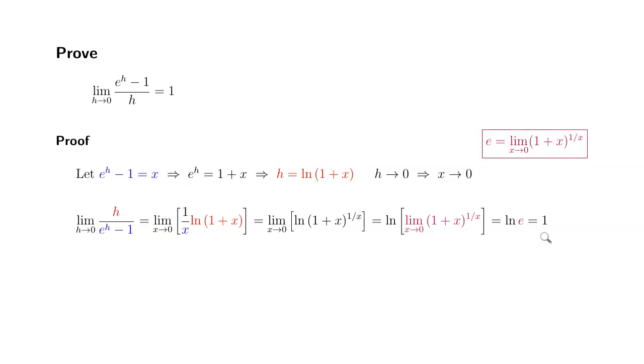By taking the reciprocal of 1, it's still going to be 1. So the limit of e to the h minus 1 all over h as h approaches 0 is equal to 1. That's it. I hope that this was clear.